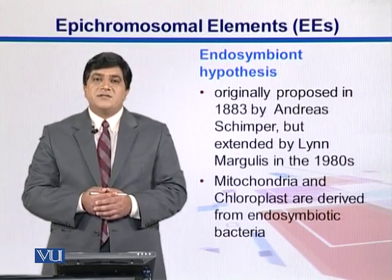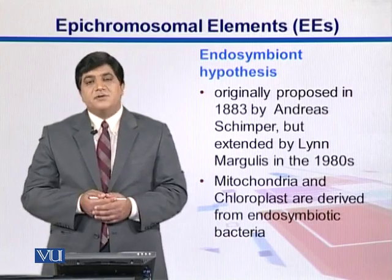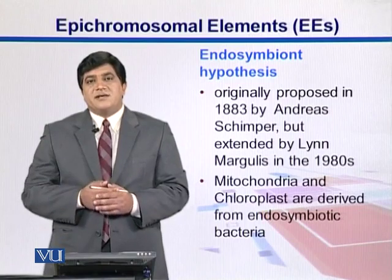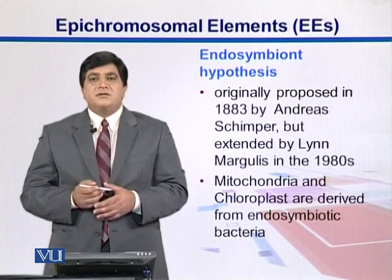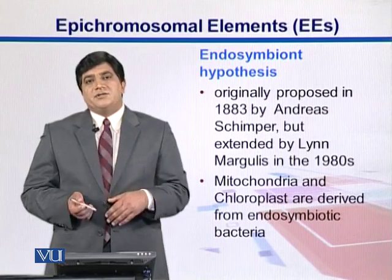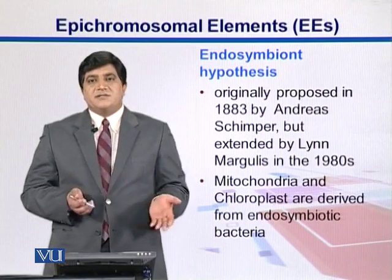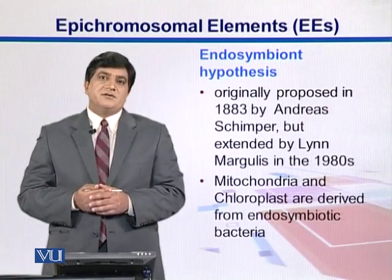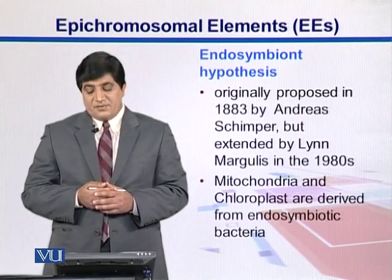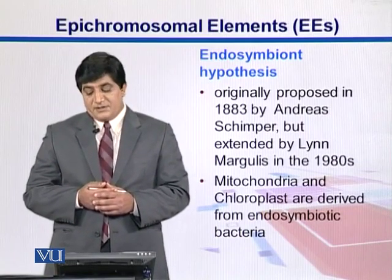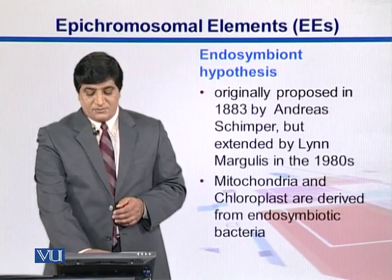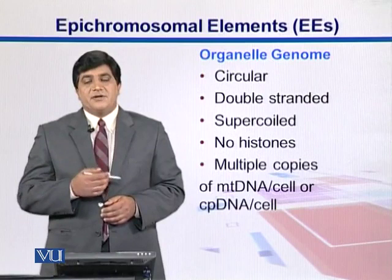How did these organisms evolve? There is a hypothesis called the endosymbiont hypothesis: these organelles got incorporated into cells, and then the cells and these organisms developed a good relationship with each other. They were helping in storing or obtaining energy for those cells, and in return the cells were producing additional proteins needed for the organelles' replication. This hypothesis was originally proposed by Andreas Schimper and then extended by Lynn Margulis in 1980. According to this, mitochondria and chloroplast are derived from endosymbiotic bacteria that got incorporated into the cells.